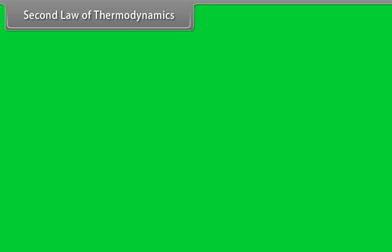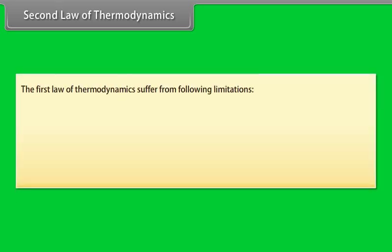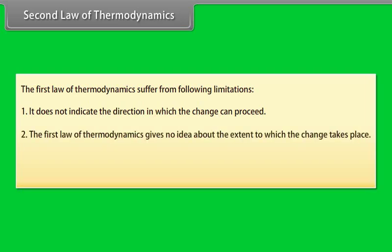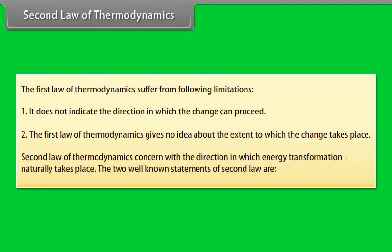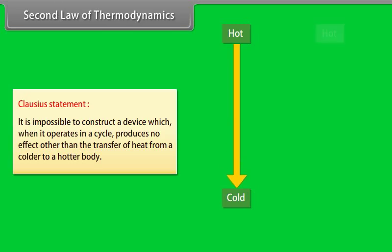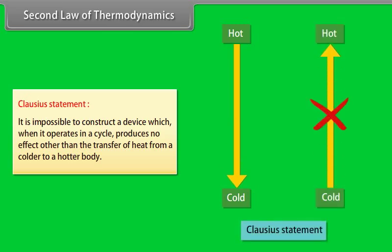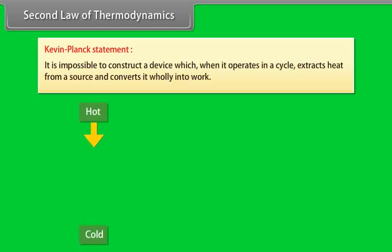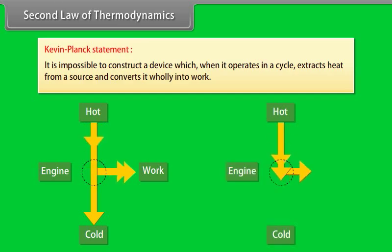Second Law of Thermodynamics. The first law of thermodynamics has limitations: it does not indicate the direction in which a change can proceed, and gives no idea about the extent to which changes take place. The second law concerns the direction in which energy transformation naturally takes place. Two well-known statements are: Clausius statement — it is impossible to construct a device which, operating in a cycle, produces no effect other than the transfer of heat from a colder to a hotter body; Kelvin-Planck statement — it is impossible to construct a device which, operating in a cycle, extracts heat from a source and converts it wholly into work.